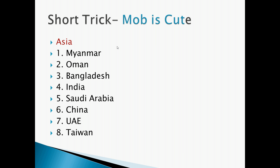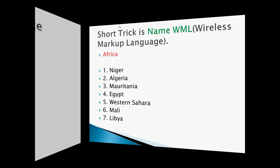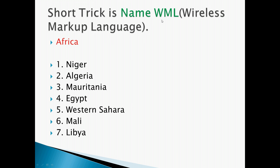Now for Africa, the shortcut trick is 'NAME VML' — we can remember VML as Wireless Markup Language, but here we use all the alphabets in 'NAME VML'. N for Niger, A for Algeria, M for Mauritania, E for Egypt, W for Western Sahara, M for Mali, and L for Libya. This is the trick to remember the countries of Africa.